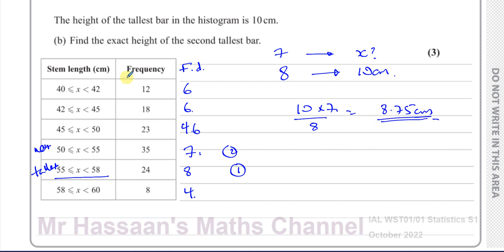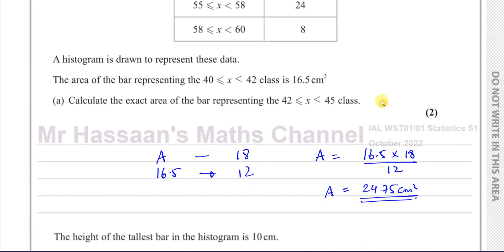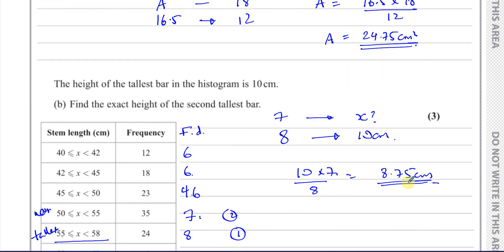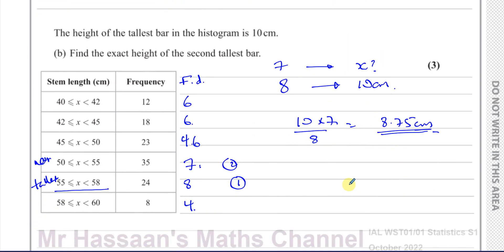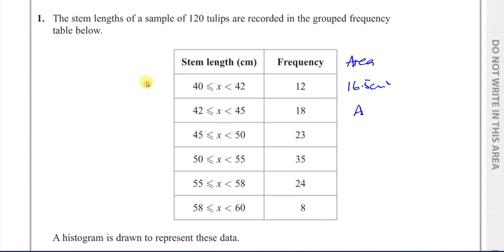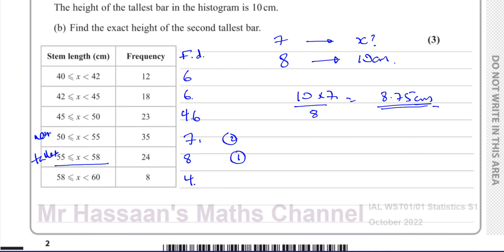So we got the area and height by using proportion. We have to understand that it's the frequency density that determines the height of the bar, not the frequency. If you went by frequencies alone you might think a different bar is the highest, but it's not. Alright, so there's the answer for 1A and 1B.